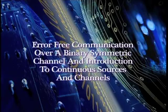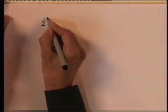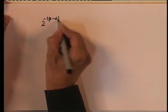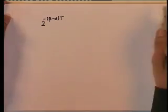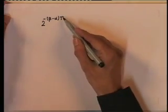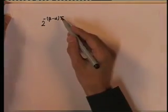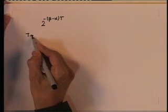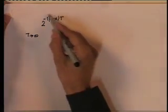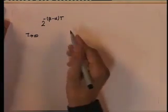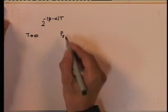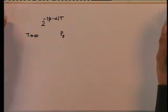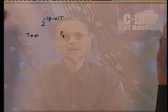In the last class, we studied that the occupancy factor by transmitted message is 2 to the power negative of the term beta minus alpha times t. This can be made as small as possible simply by increasing t. In the limit, as t tends to infinity, the occupancy factor tends to 0. This will make the error probability P_e go to 0 and we have the possibility of error free communication.